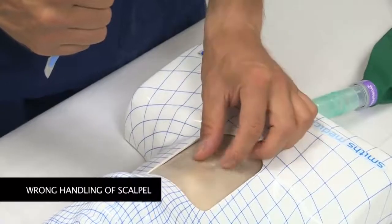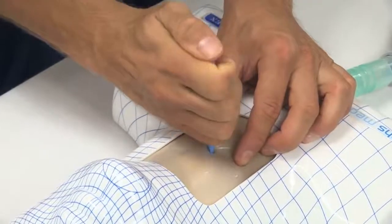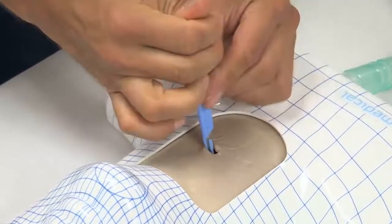Too much force while performing a stab incision may result in excessive damage to the airway. This may cause excessive bleeding or even result in tracheal transection.